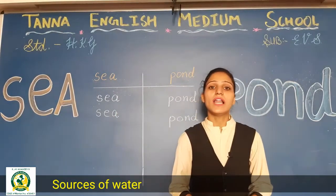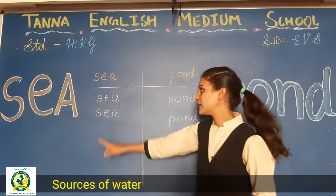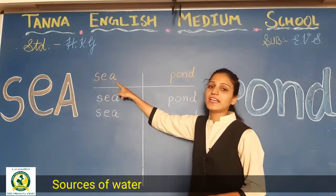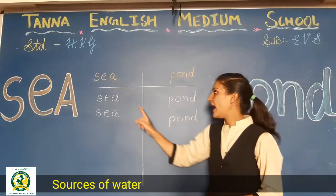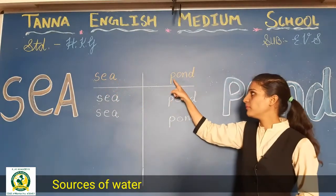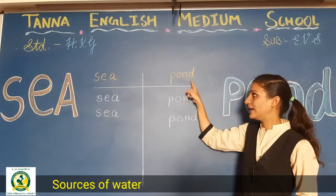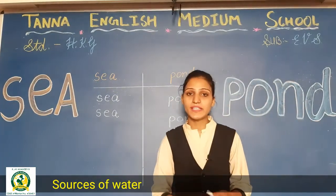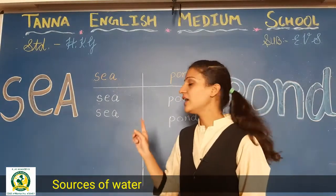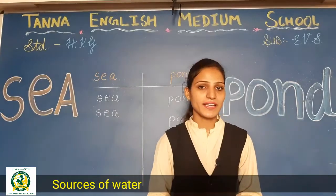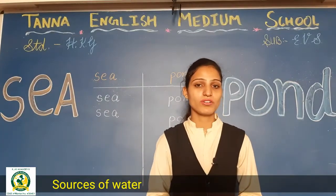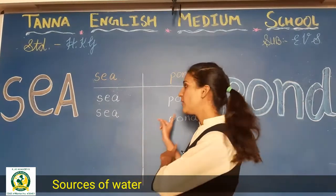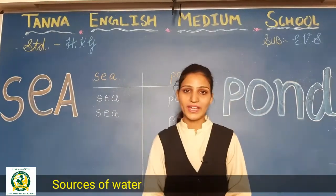वह आपको learn भी करने हैं. C का spelling S-E-A, and pond — P-O-N-D. So students, अपने CW and HW में आपको यह read करके लिखना है — sources of water: sea and pond. Okay?